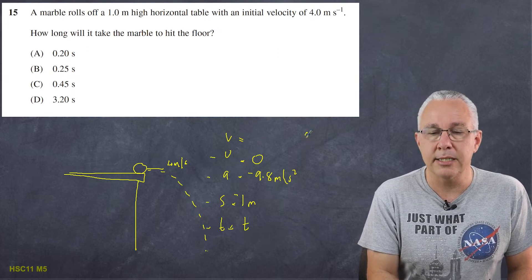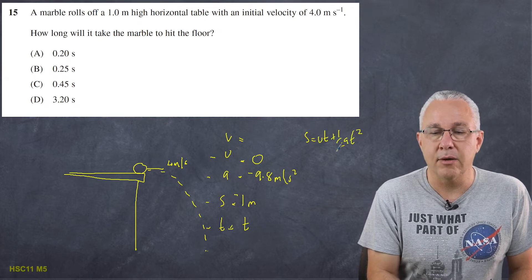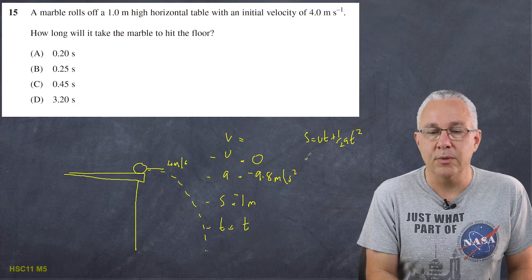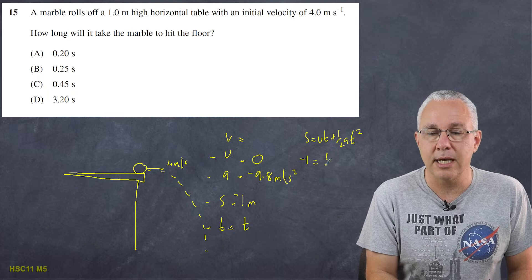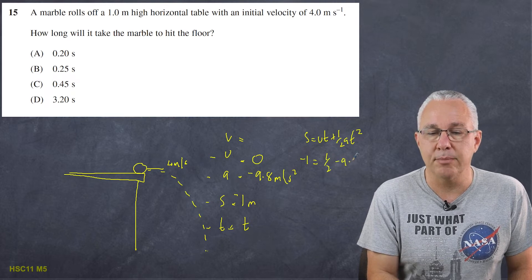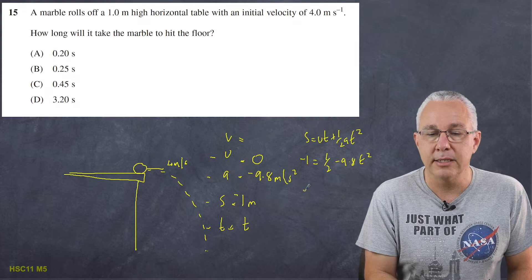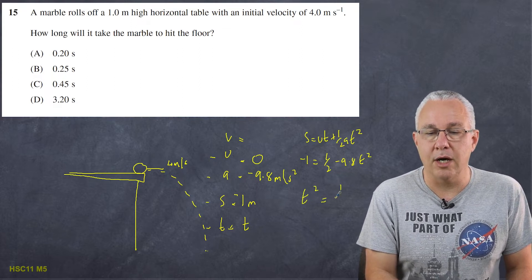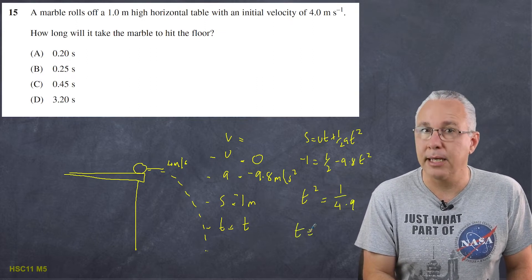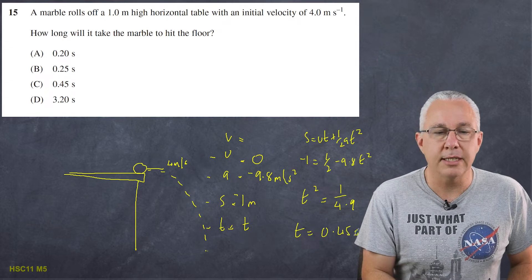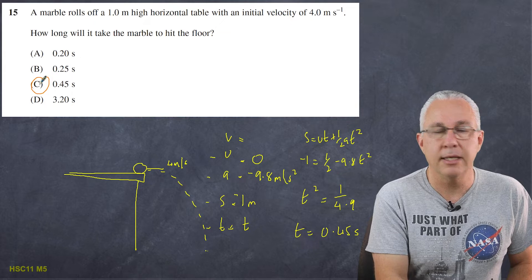So the formula is s equals ut plus a half at squared. Now if we substitute everything in we're going to get negative one on one side it has zero initial velocity so all we have left is a half multiplied by negative 9.8 and then t squared. If you rearrange that you're going to get t squared equals 1 over 4.9 and of course t therefore becomes 0.45 seconds. Looking at our responses you see our answer is going to be c.